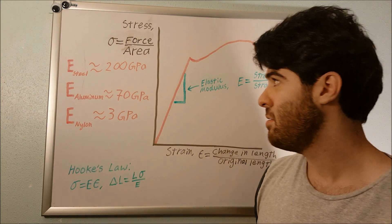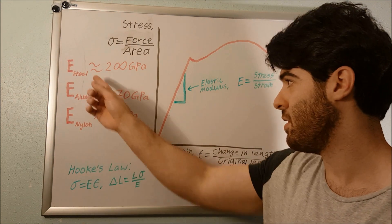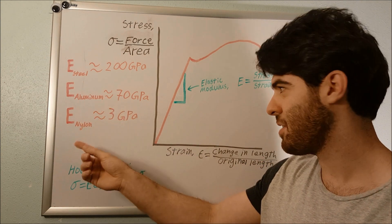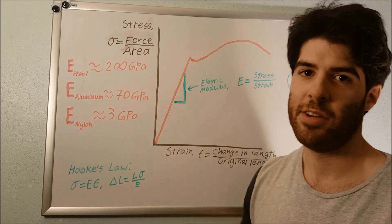Here are some typical values of elastic modulus. For steel, it's 200 gigapascals. For aluminum, it's 70 gigapascals. And for nylon, it's 3 gigapascals.